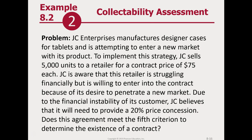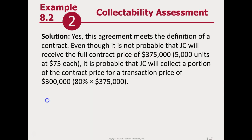But we may have to give them 20 percent off. So do we meet the fifth criterion — is collection probable? The answer is yes. It is probable, but it's probable at 80 percent of the full contract price. Therefore, the transaction price is the probable amount. We multiply the full contract amount, $375,000, times 80 percent. That's our transaction price. We don't worry about what's written in the contract; we worry about what's actual — what's probable.